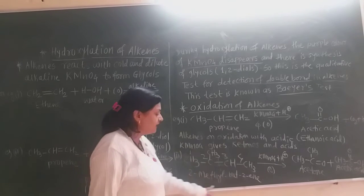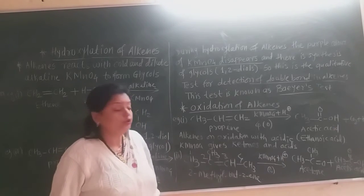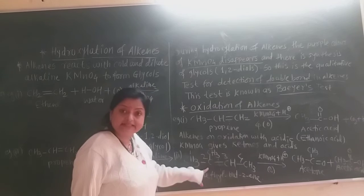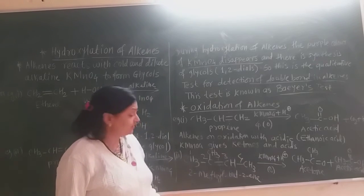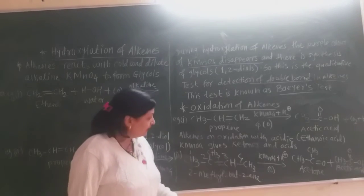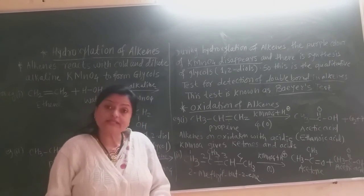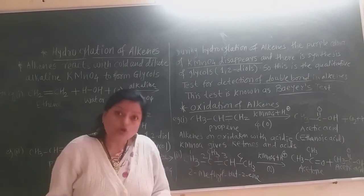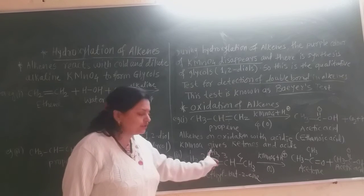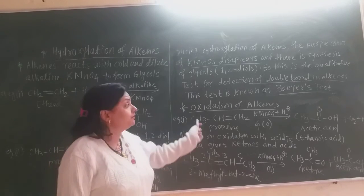Here is another alkene. The name of this alkene is 2-methylbut-2-ene. It is 2-methylbut-2-ene because numbering is done from this end: 1, 2, 3, 4. On the second carbon there is a methyl group, there are 4 carbon atoms in the chain, and there is a double bond on the second carbon. So it is 2-methylbut-2-ene. On oxidation with acidified potassium permanganate, nascent oxygen is formed. Acetone is formed from one group and acetic acid is formed from the other group at the carbon-carbon double bond.